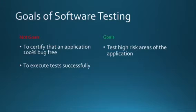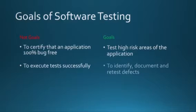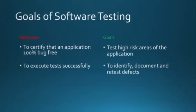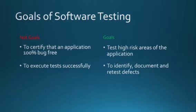The second example of what isn't a goal is to execute tests successfully. People would say, isn't that what we're trying to accomplish? And what I would respond is no — we're not trying to just make sure that we get green check marks beside all of our test cases. The real goal is to identify, document, and retest defects. Our job as the testing team is to look for defects within the application in the high risk areas, also known as high risk based testing. Our goal is not just to make sure that all of our tests pass.